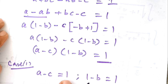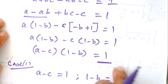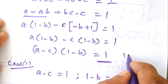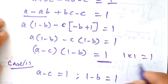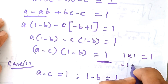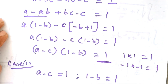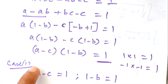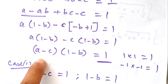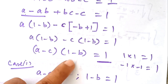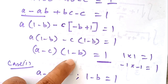In Case 1, A minus C is 1 and 1 minus B is 1, so 1 times 1 equals 1. Another case: both factors are negative — minus 1 times minus 1 also equals 1. Therefore in Case 2, A minus C is equal to minus 1 and 1 minus B is also equal to minus 1.